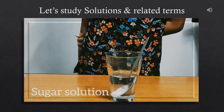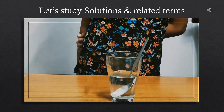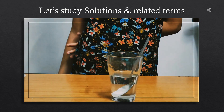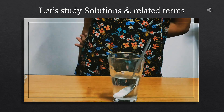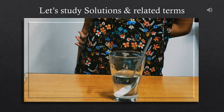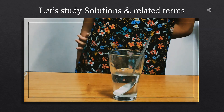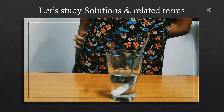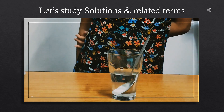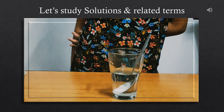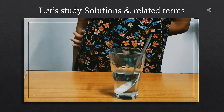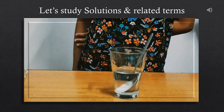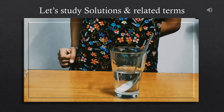So tell me how many components we added? The substances used to make a solution are called components. Two components were used. Thus when two components are used, it forms a binary solution.